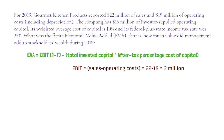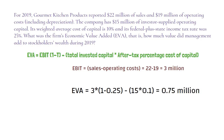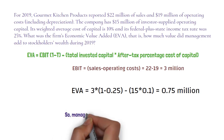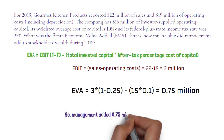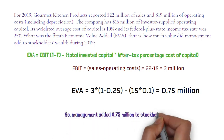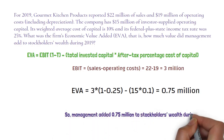Now apply the formula: EVA equals 3 times 1 minus 0.25, then minus 15 times 0.1. So, management added 0.75 million to stockholders' wealth during 2019.